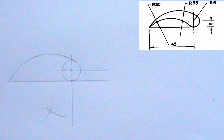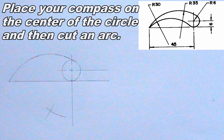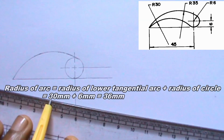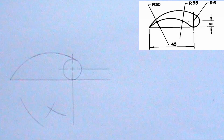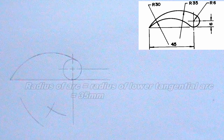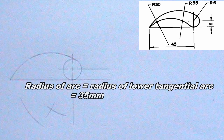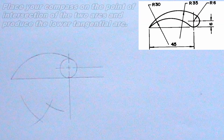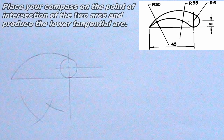I will also produce the lower tangential arc. To produce the lower tangential arc, I will place my compass on the center of the circle, then I will cut an arc. The radius of the arc should be the radius of the tangential arc plus the radius of the circle. I will also place my compass on the left end of the first horizontal line, then cut another arc of radius equal to the radius of the tangential arc, which is 35mm. The two arcs should meet at a point. I will then place my compass on the point of intersection of the two arcs and produce the tangential arc using the radius of 35mm.